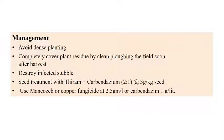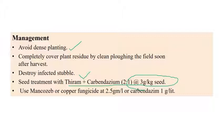Coming to the management aspects: avoid dense planting and cover or incorporate crop residues. Seed treatment with thiram or carbendazim in a 2:1 ratio at 3 grams per kilogram is recommended. Use mancozeb or copper fungicides at 2.5 grams per litre of water, or carbendazim at 1 gram per litre of water.